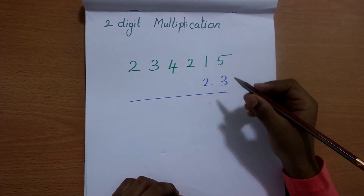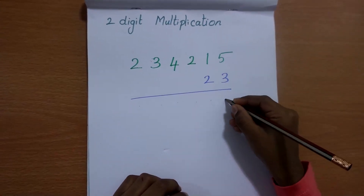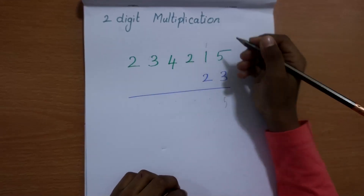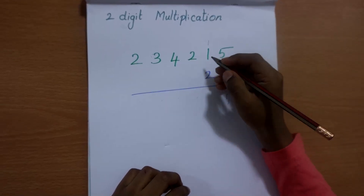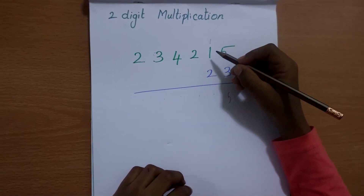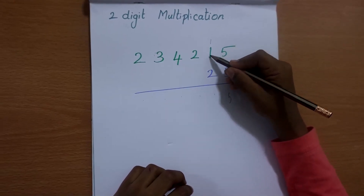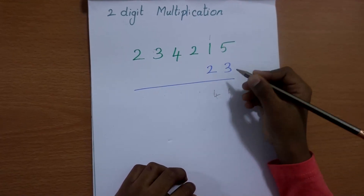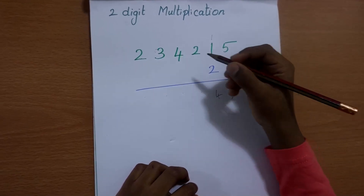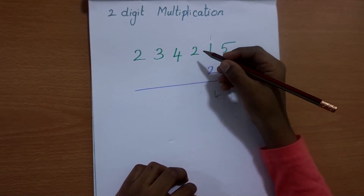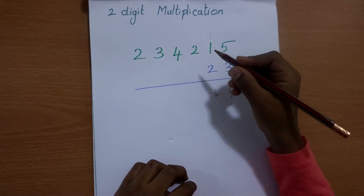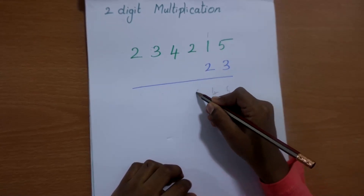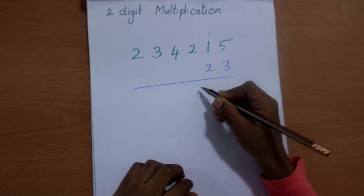3 times of 5 is 15. 3 times of 1 is 3, we add 1. 3 times of 2 is 6, we put 6.